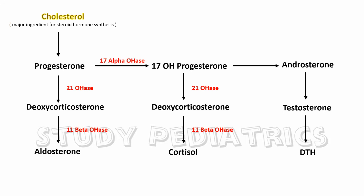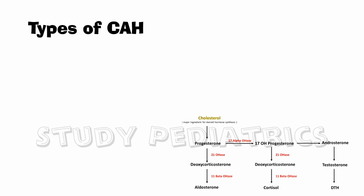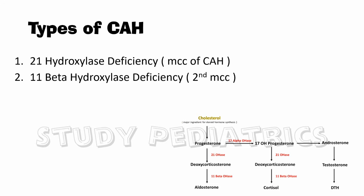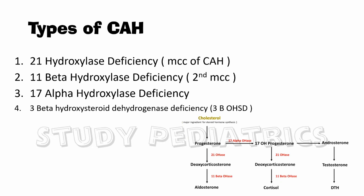Now let's see what are the types of CAH. The types of CAH correspond to enzyme deficiencies occurring in the steroid synthesis pathways. First, 21-hydroxylase deficiency, which is the most common cause of CAH. Second, 11-beta-hydroxylase deficiency, the second most common cause. Third, 17-alpha-hydroxylase deficiency. Fourth, 3-beta-hydroxysteroid dehydrogenase deficiency. And fifth, aldosterone synthesis deficiency.